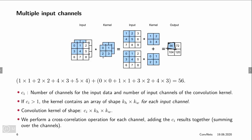So this value of 56 here, for example, is computed by placing the first channel of the kernel on the first channel of the input, yielding 0 plus 1 times 1 plus 3 times 2 plus 4 times 3, plus, on the second channel, 1 times 1 plus 2 times 2, and so on. And the sum of these two is then 56.